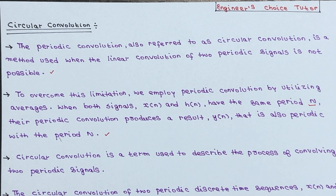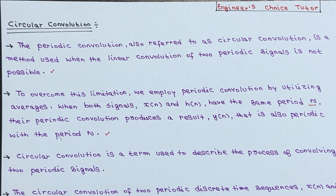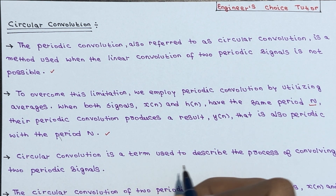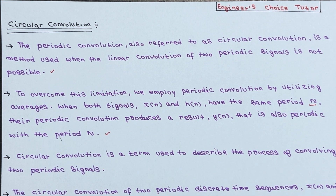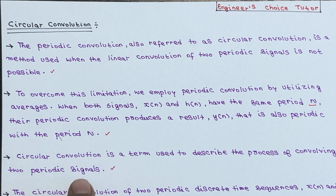The circular convolution is a term used to describe the process of convolving two periodic signals. When covering linear convolution, that was called an aperiodic convolution, but this is a periodic convolution because we are performing an operation on periodic signals.